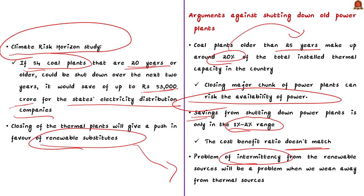We have come to the end of this discussion. We talked about old and aging coal power plants, discussed the advantages of closing them — reduction in pollution, cost efficiency, revival of discoms, push to renewable energy — and also the negatives: power scarcity, low cost-benefit ratio, and intermittency. A very important topic from mains perspective.